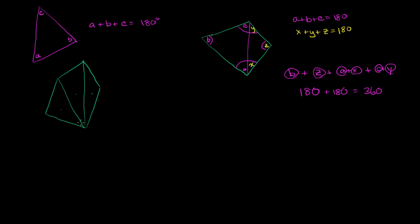And we know each of those will have 180 degrees if we take the sum of their angles. We also know that the sum of all of those interior angles are equal to the sum of the interior angles of the polygon as a whole. This interior angle is one of the angles of the polygon, and when you take the sum of combined triangle angles, you get that whole interior angle of the polygon. So if you take the sum of all of the interior angles of all of these triangles, you're actually just finding the sum of all of the interior angles of the polygon. So in this case, you have 3 triangles, so 3 times 180 degrees is equal to 540 degrees.